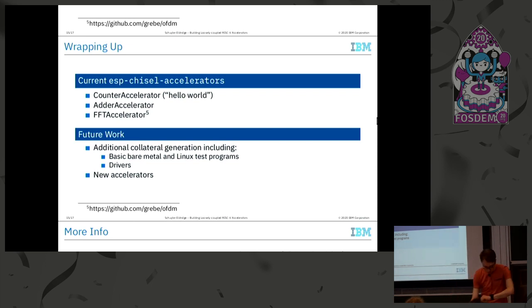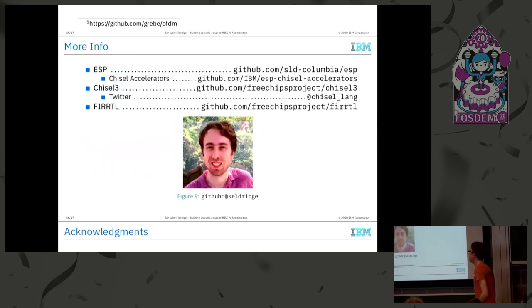This is just links to the project, some stuff about me. The main project is ESP Project, there's the Chisel Accelerators which is a submodule of that. For Chisel 3, that's on FreeChips Project, but that will eventually switch to another project called CHIPS Alliance. We have a Chisel 3 Twitter, there's a FIRRTL project, and my GitHub if that's of any interest. That's it, and I think I somehow got back on time after that interesting start. Thank you. Any questions?